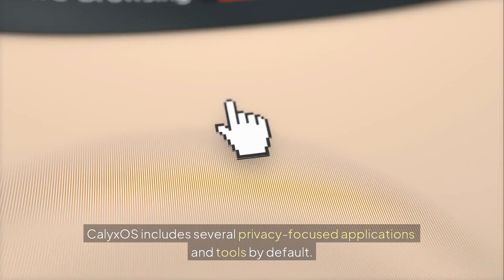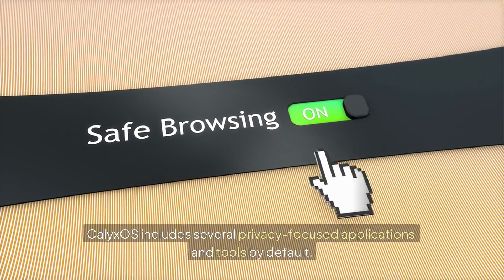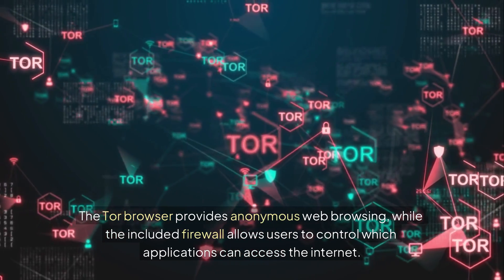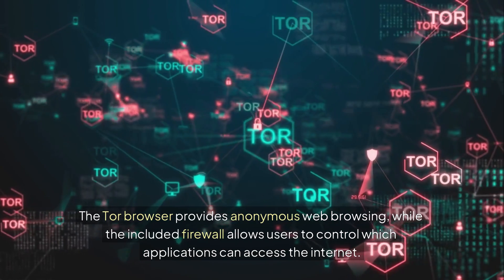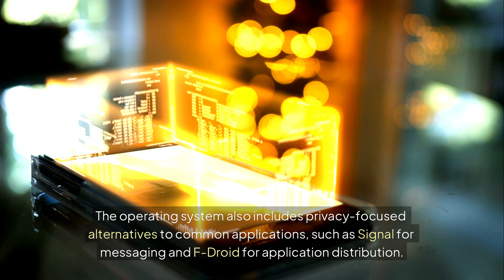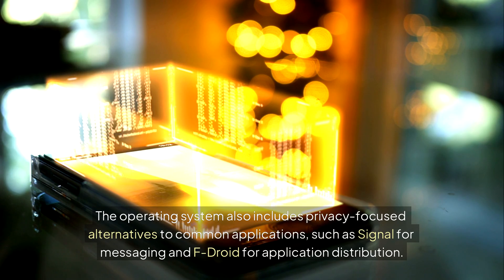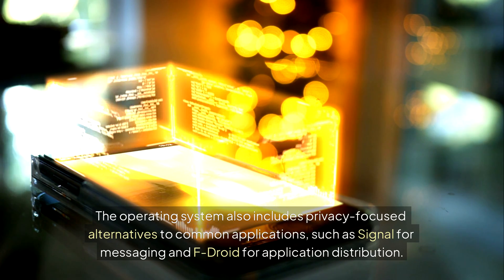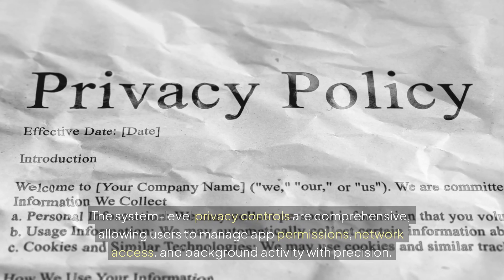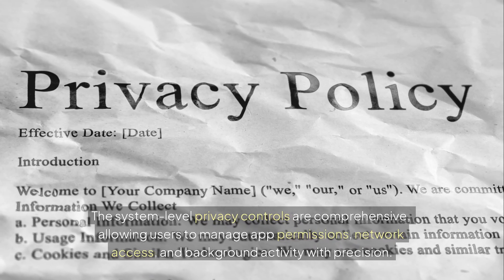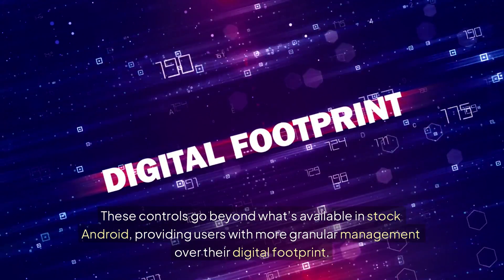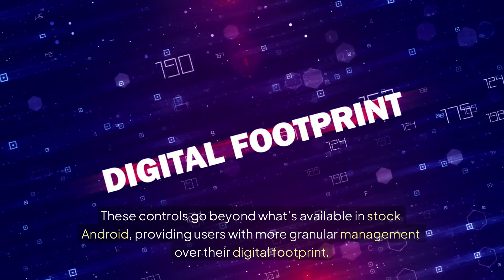Built-in privacy tools: Calix OS includes several privacy-focused applications and tools by default. The Tor browser provides anonymous web browsing, while the included firewall allows users to control which applications can access the internet. The operating system also includes privacy-focused alternatives to common applications, such as Signal for messaging and F-Droid for application distribution. The system-level privacy controls are comprehensive, allowing users to manage app permissions, network access, and background activity with precision — going beyond what's available in stock Android.